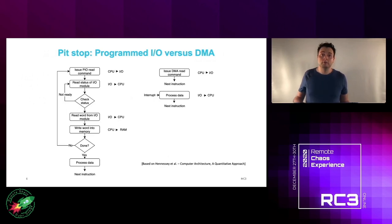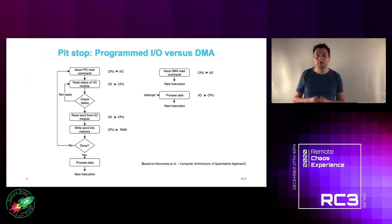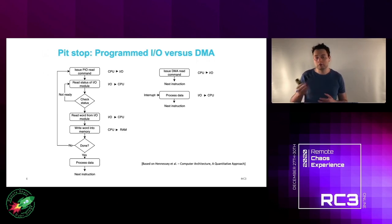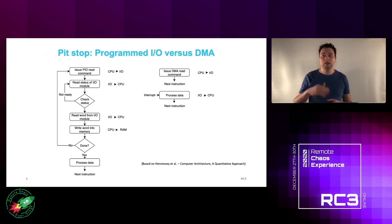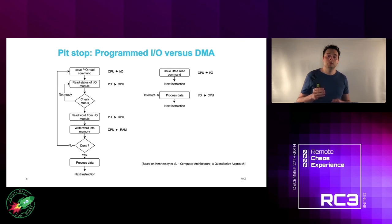When a CPU requests data from a third-party device, there are essentially two methods. The first, called Programmed I/O, has the CPU issuing a read request to the device. The device gathers the requested data while the CPU keeps polling its status. Once ready, the CPU copies the data from the device into system RAM, then moves on to the next instruction.